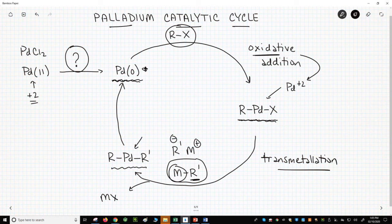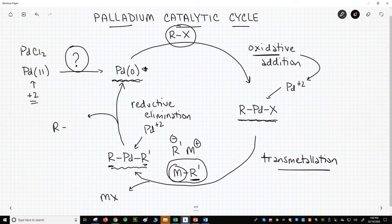The final step is called a reductive elimination. Palladium bound to what amounts to two carbanions R and R prime is not very stable. The palladium slips from between the R and R prime groups. That gives our final product R R prime. This is our biaryl product,